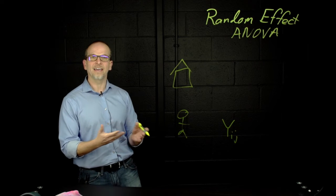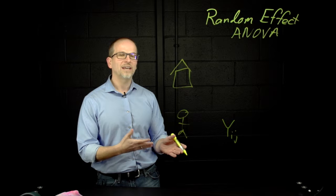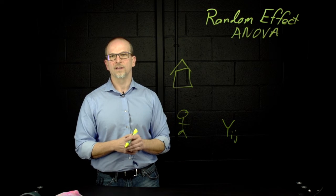Now in this case, i indicates the particular student, my level one variable, where j indicates my school, my level two variable.